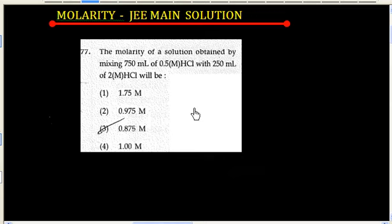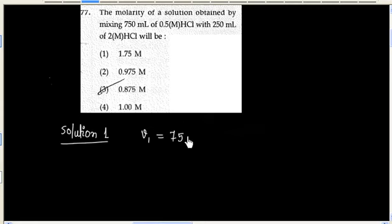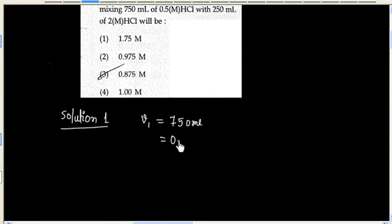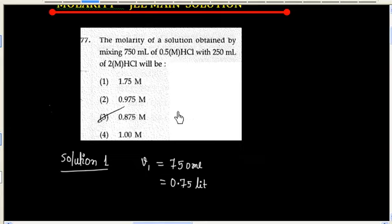We have two HCl solutions. The first solution has volume 750 mL, that is 0.75 litre, and molarity is 0.5 M.